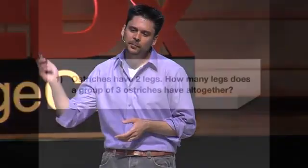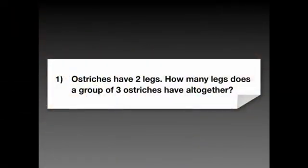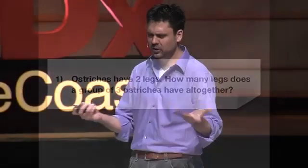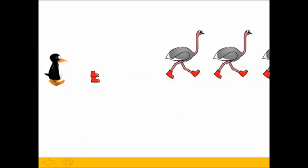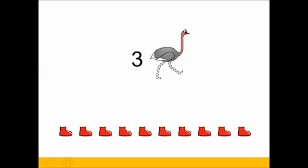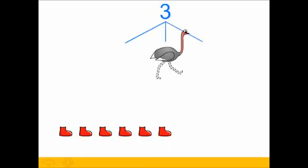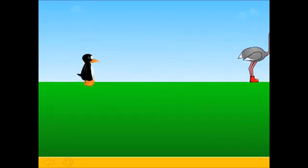Okay, so this works for shapes, but what about things like word problems? How can we do those without words? Here's a typical word problem from a second-grade textbook: "Ostriches have two legs. How many legs does a group of three ostriches have all together?" We can translate this into a completely word-free problem. If you don't know what to do and you get it wrong — say you pick eight legs — it shows you why that's wrong. We picked too many. And when you get it right, it shows you why it's right. The feedback teaches the students.